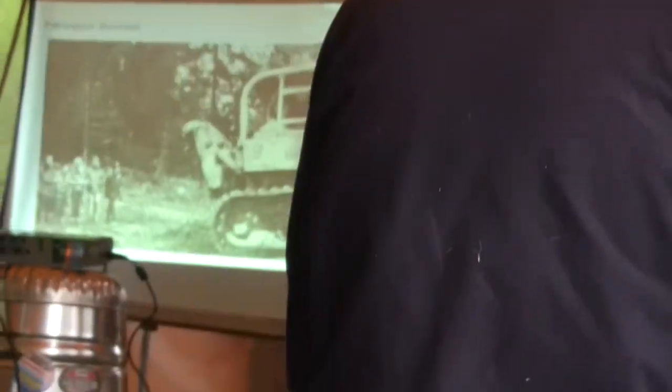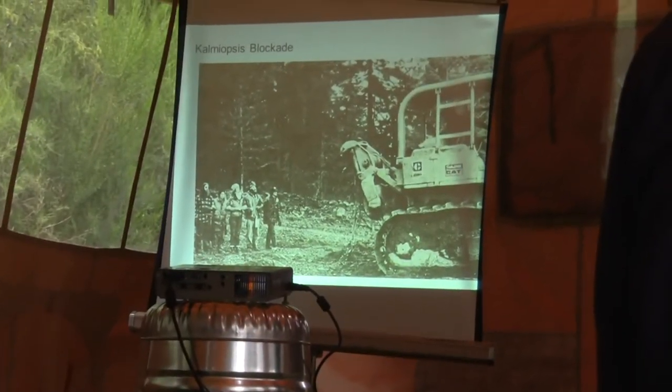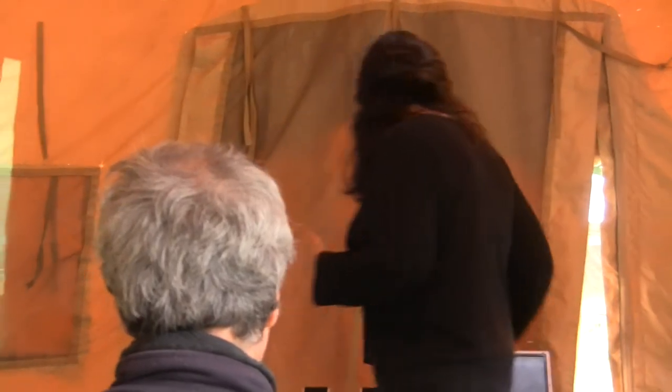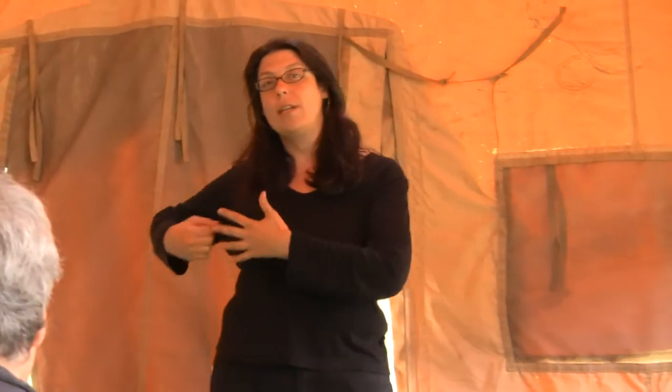Soft blockades like this can work out in the forest — you're physically standing between the bulldozer and the worker, saying you have some hope that the person behind the vehicle cares enough about not causing harm to a human. That's part of the calculus you put into your direct action plan. You're assuming the person behind the wheel does not want to be responsible for taking a human life. And sometimes it's a really effective tool. But the cops can move you pretty easily when you're standing, so you could go from standing to sitting.